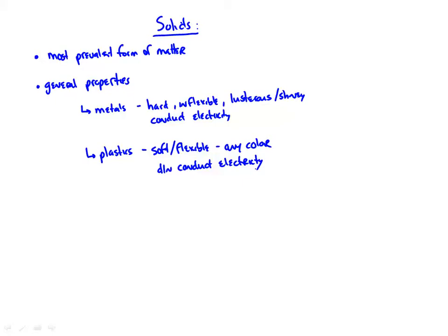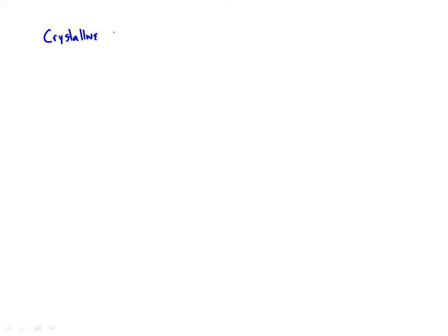Solids can vary quite considerably in their properties. There are two main categories of solids: what we call crystalline solids and what we call amorphous solids.